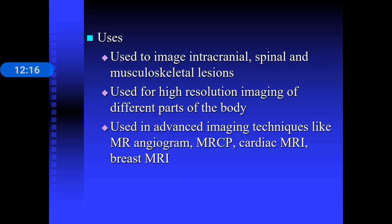T1 images are primarily used to see normal anatomy, while T2 images are used to assess pathological processes. MRI is used to image intracranial, spinal, and musculoskeletal conditions, as well as higher-resolution imaging of soft tissues. Advanced techniques include MR angiography, MRCP (used for choledocholithiasis or CBD stones), cardiac MRI, and breast MRI.